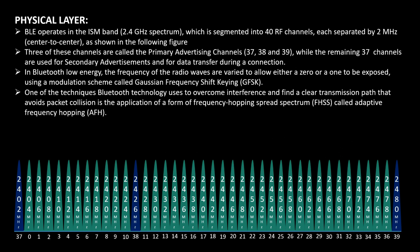BLE operates in the ISM band at 2.4 GHz, which is a free band for short-distance communication. It is segmented into 40 RF channels, each separated by 2 MHz as shown in the figure. There are channel indices 0 to 39, out of which three channels are used for primary advertising and the remaining 37 channels are used for secondary advertising and data transfer during a connection. BLE uses Gaussian Frequency Shift Keying (GFSK) modulation to transmit data, where the frequency of the RF radio wave is varied to send either a 0 or 1.